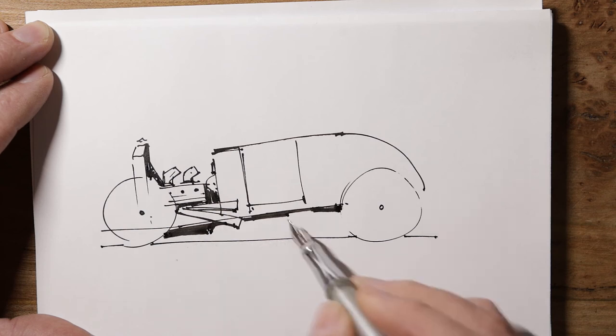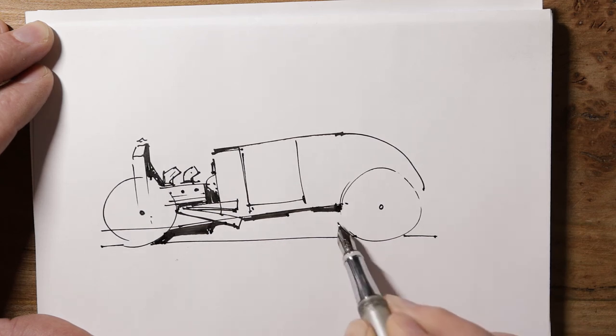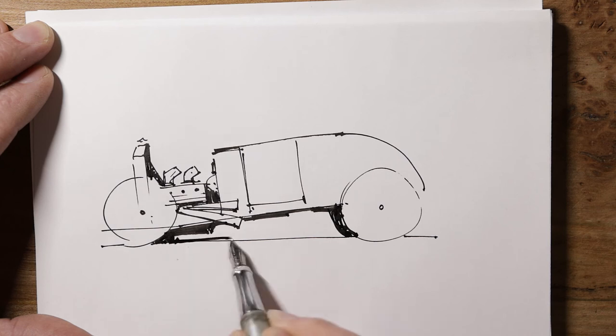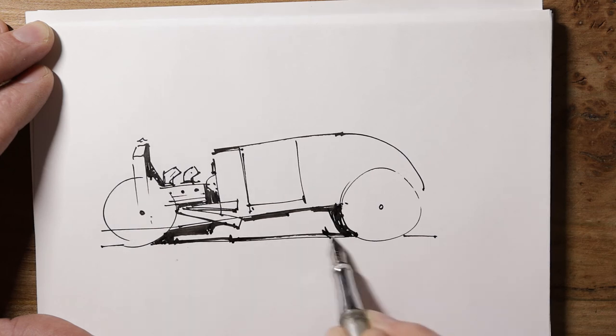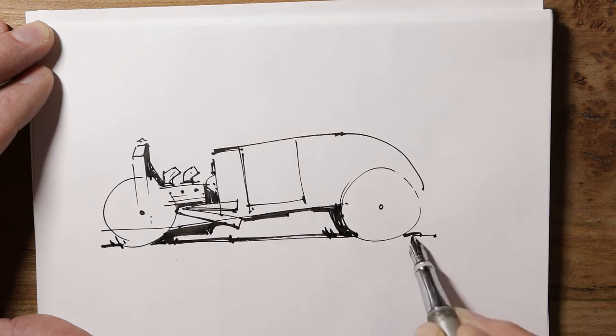And because we want to make this more three-dimensional, we'll show the wheels on the far side as well, just in silhouette. And I'll darken the shadow on the ground. That'll help make it feel more three-dimensional.